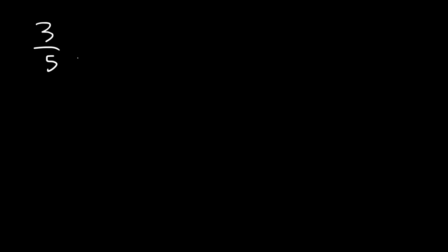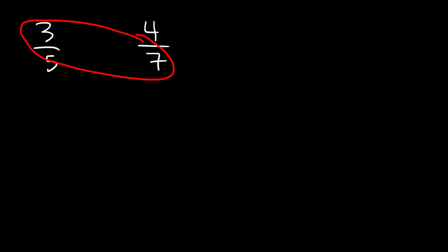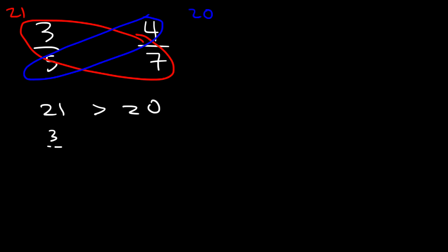Here's another example: try 3 over 5 and 4 over 7. Feel free to use any technique that you prefer. Let's start with the cross multiplication technique. 3 times 7 is 21, and 4 times 5 is 20. These numbers are pretty close, but 21 is greater than 20. So therefore, 3 over 5 is greater than 4 over 7.